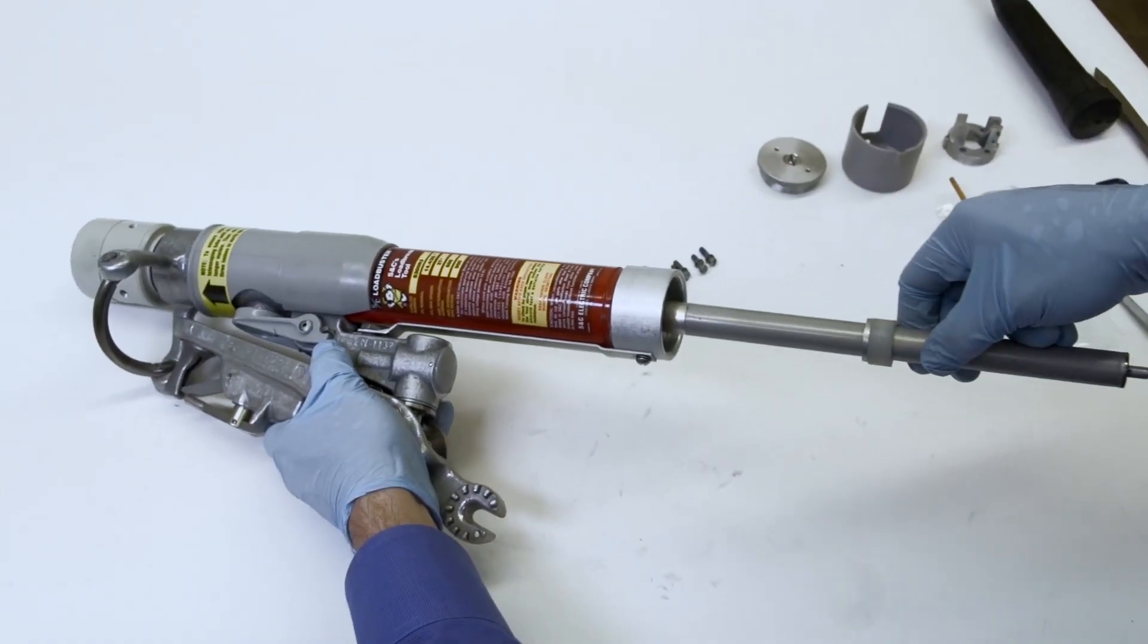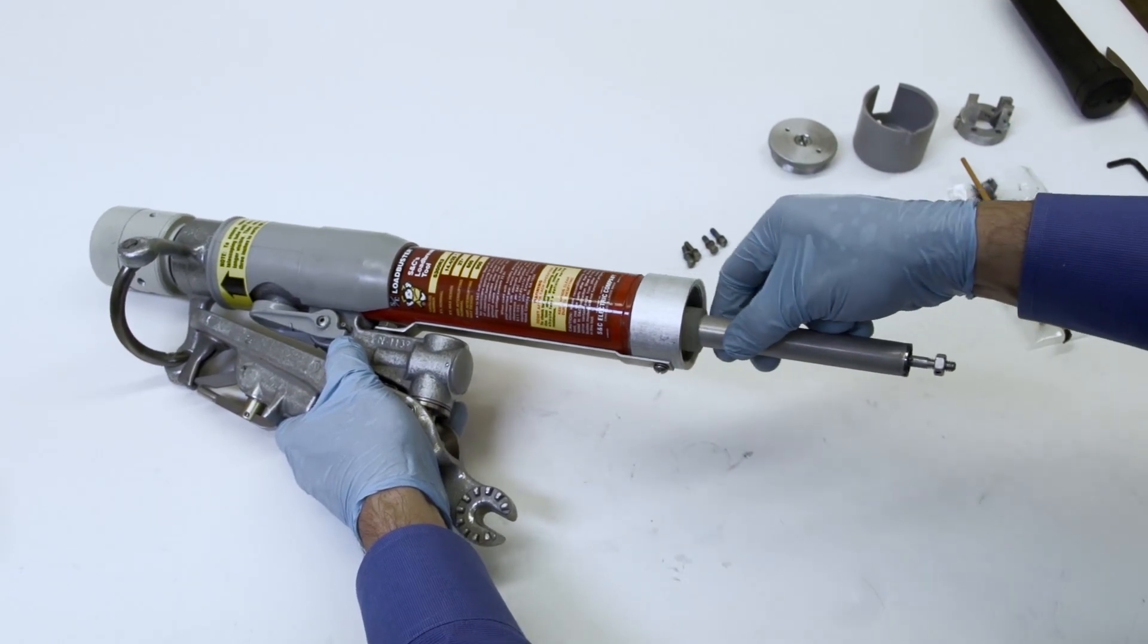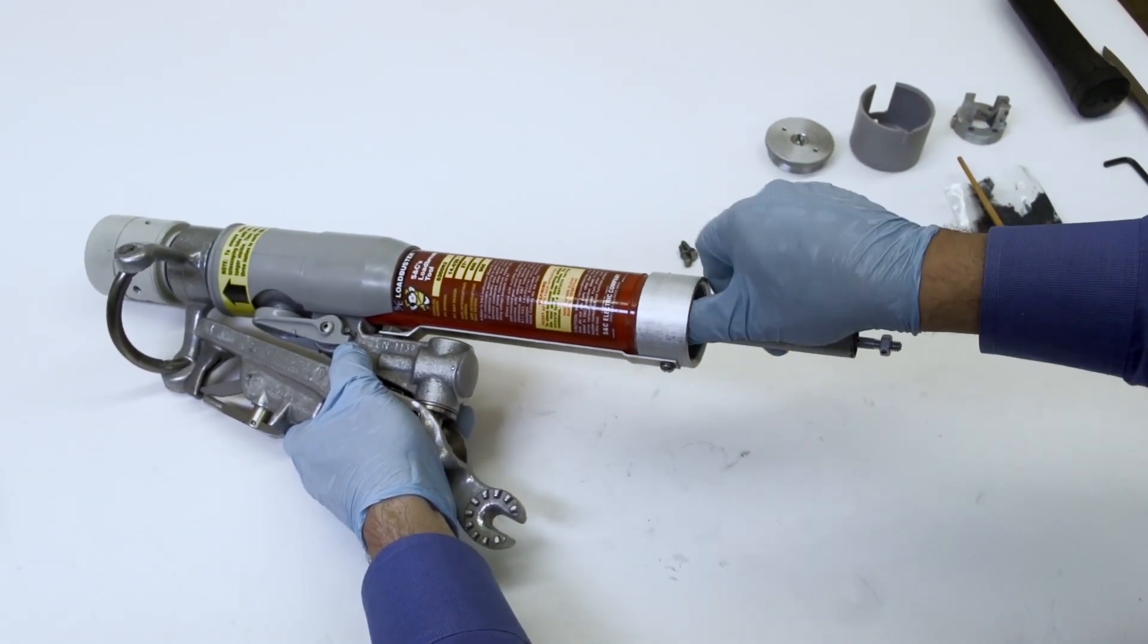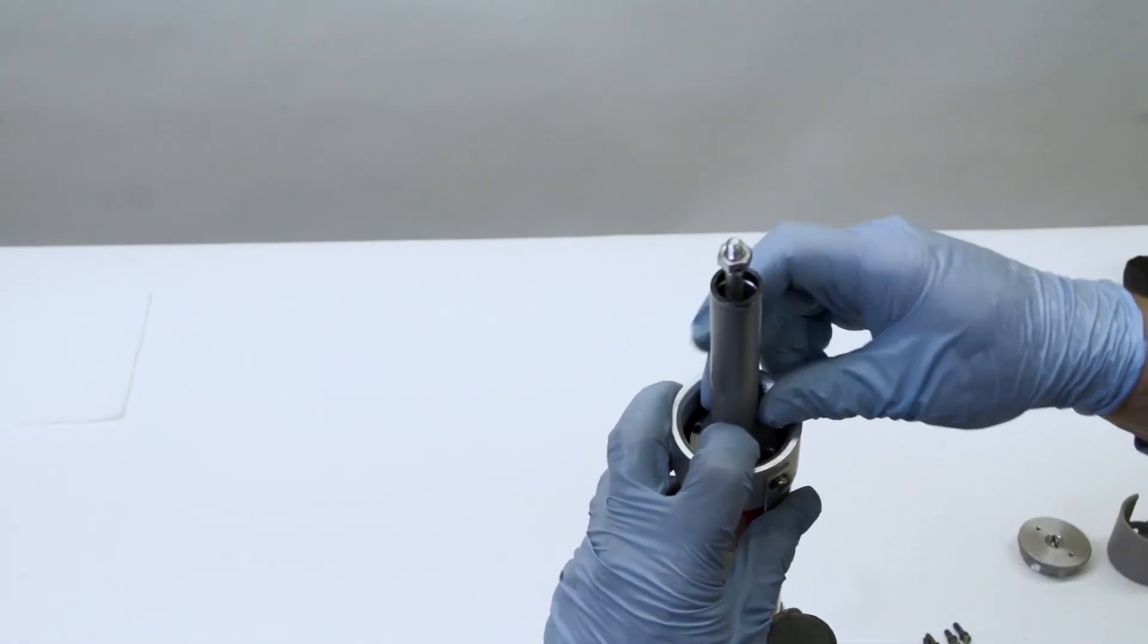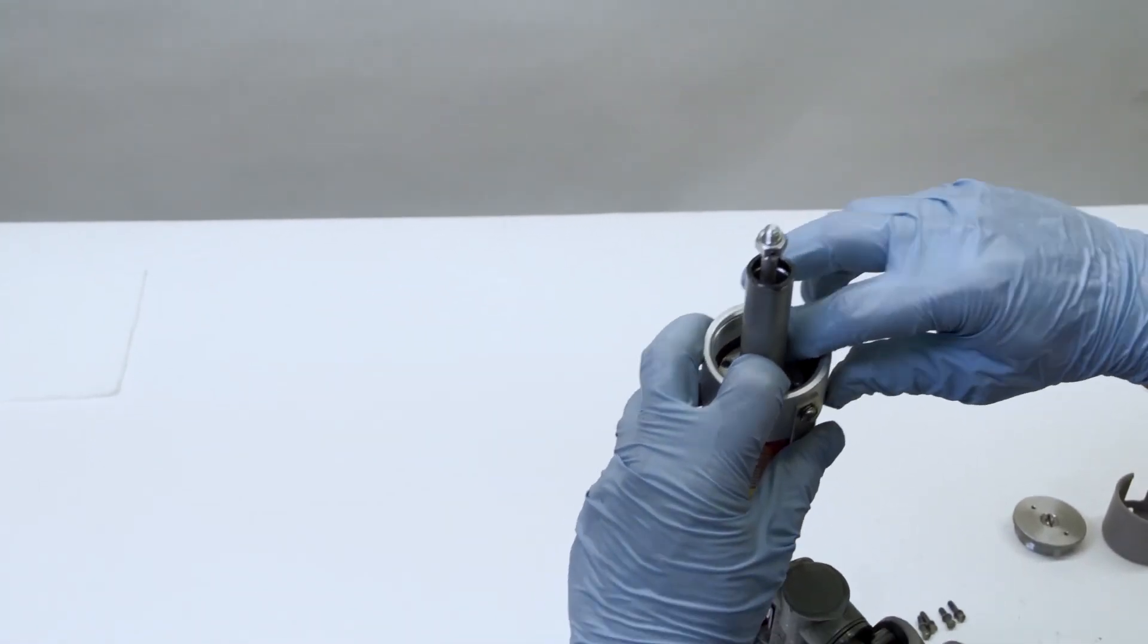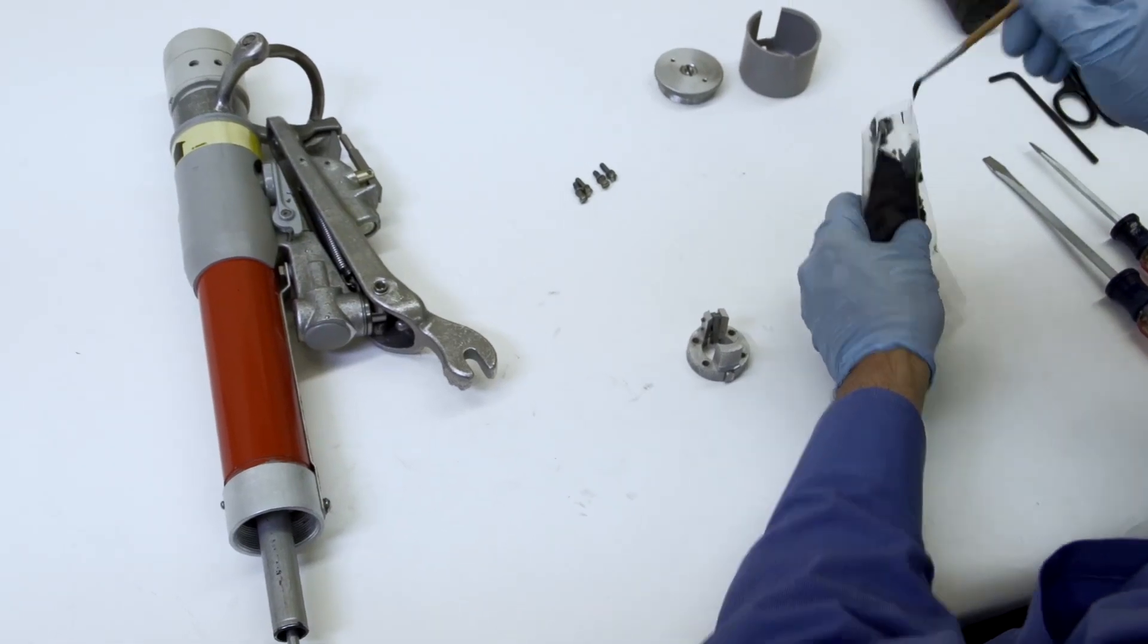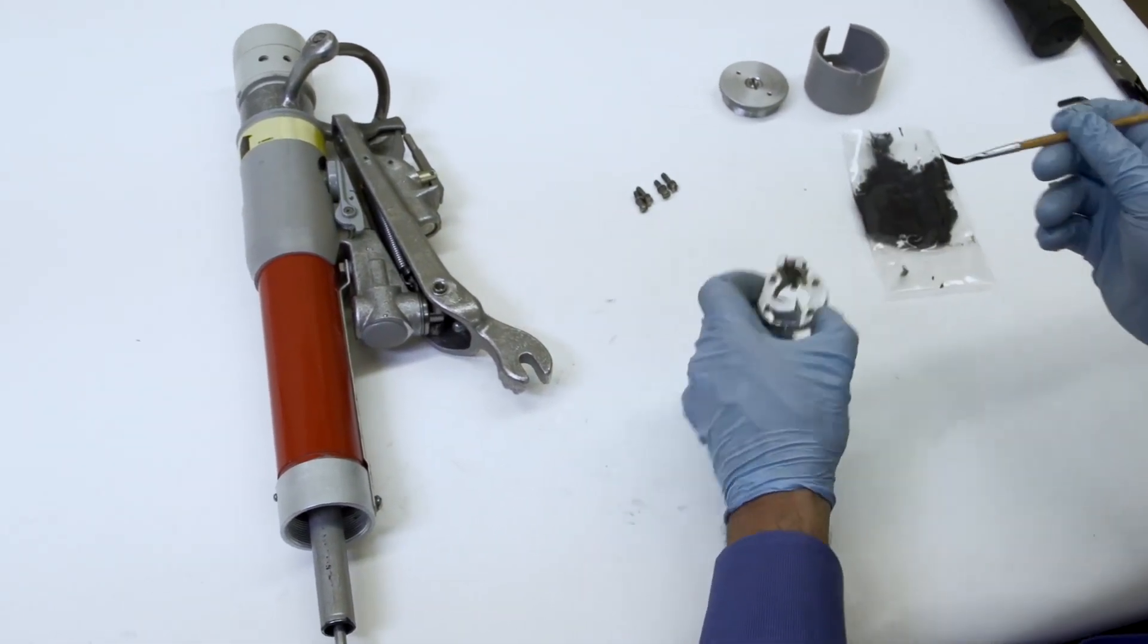Insert the moving contact assembly into the inner tube assembly, trailer end first, making sure that the guide bearing is seated in the inner tube assembly. Apply a light coating of DC Moly GN paste to the latching area of the trigger.